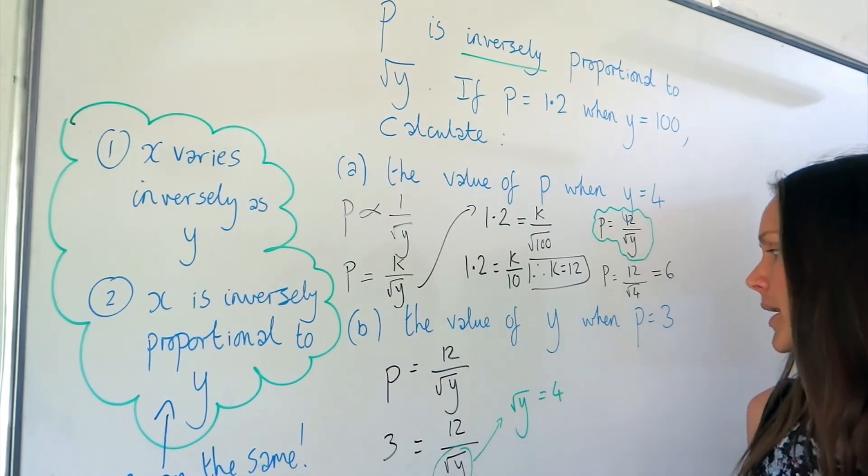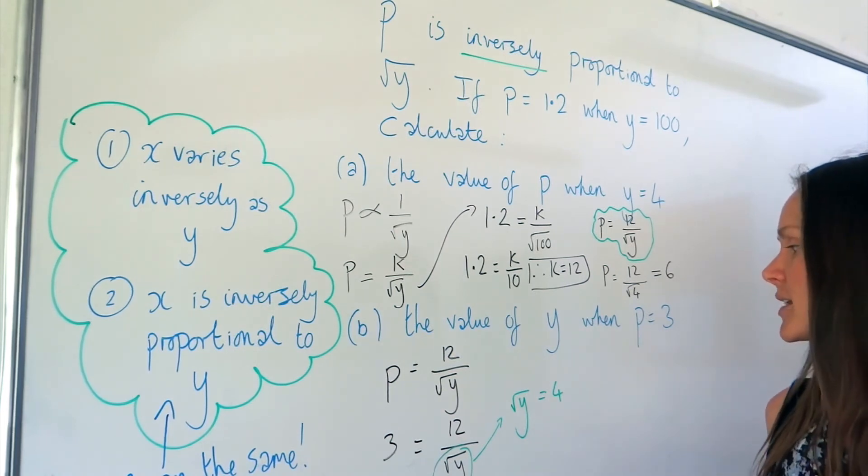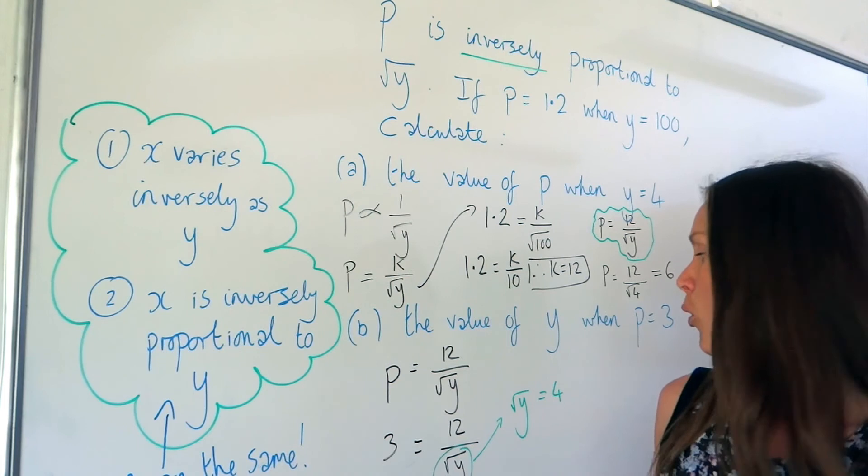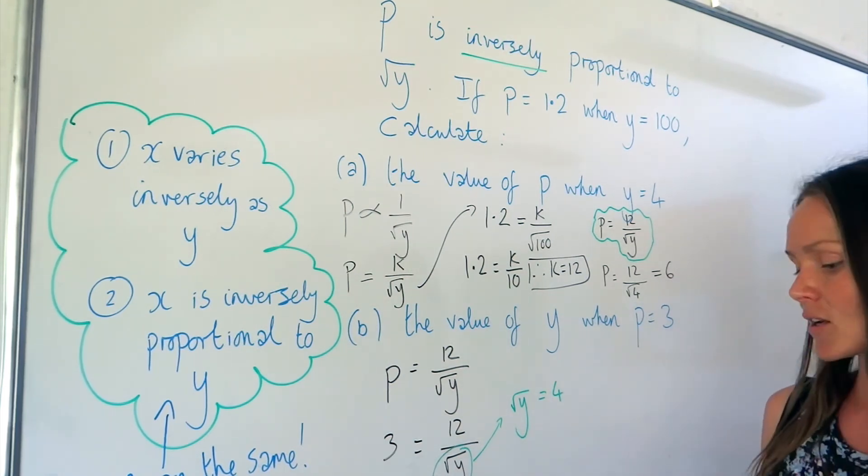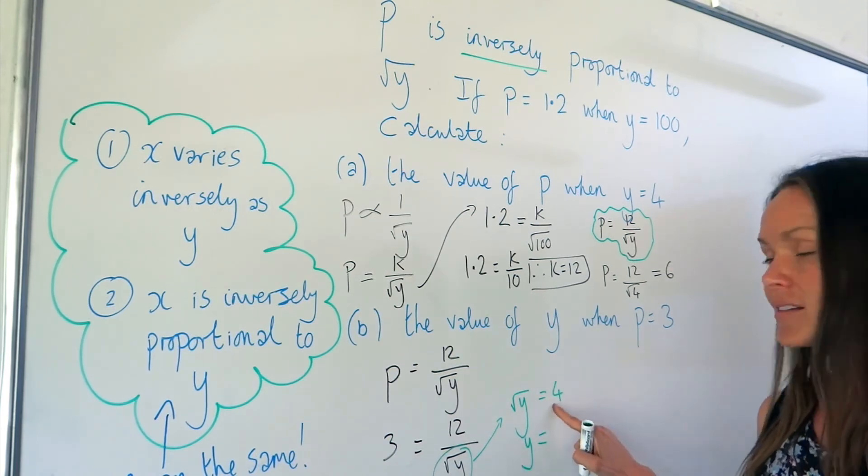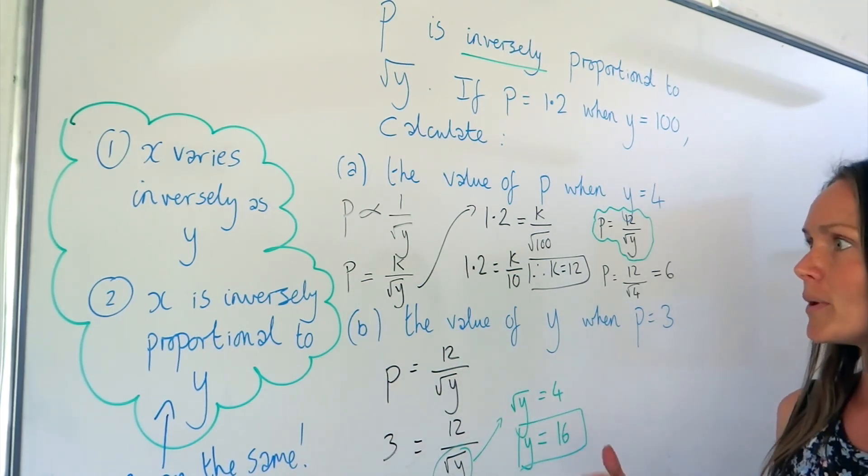Now, there's a couple of ways of thinking of the solution here of Y. You could say what number, when you square root, it gives you 4. Or you could just square both sides. So when I square both sides of this equation, it gets rid of the square root on the left-hand side. And when I square the right-hand side, 4 squared is 4 times 4, which is 16. So there's the answer to part B.